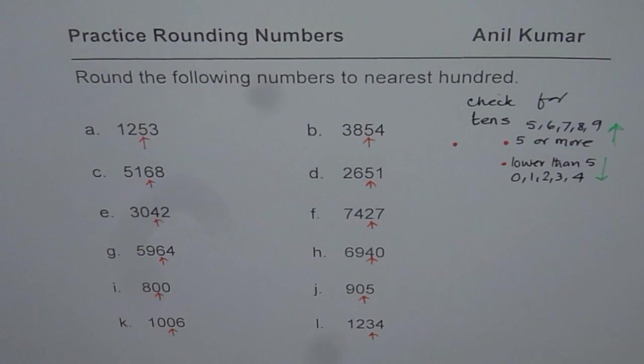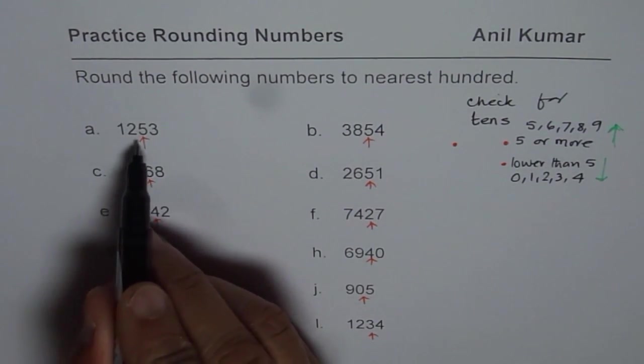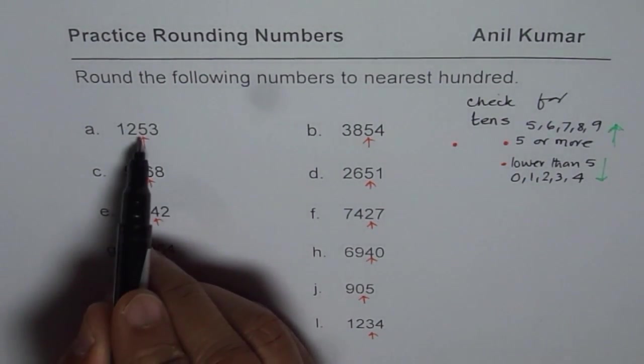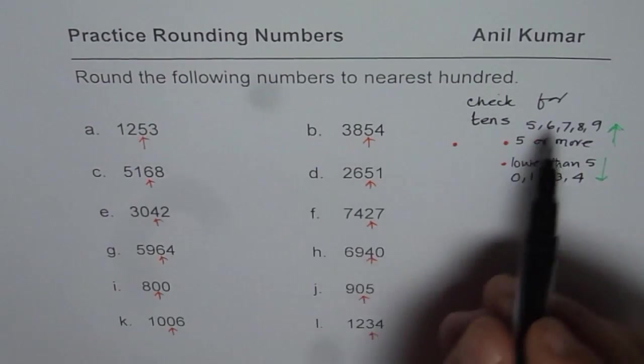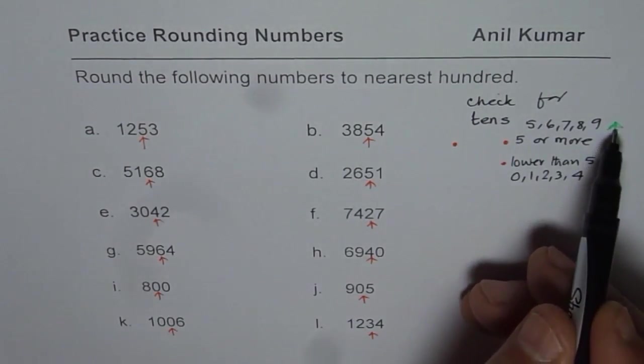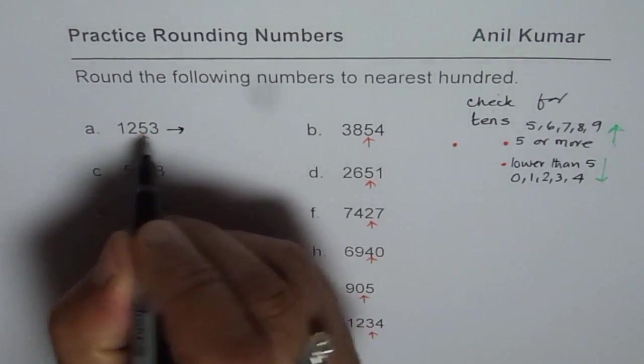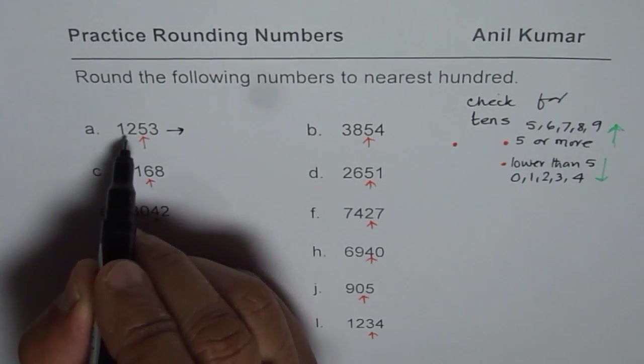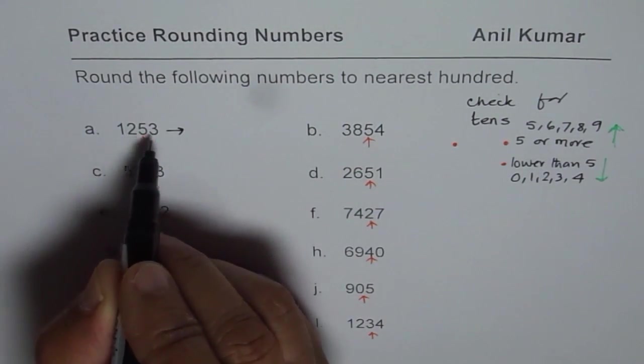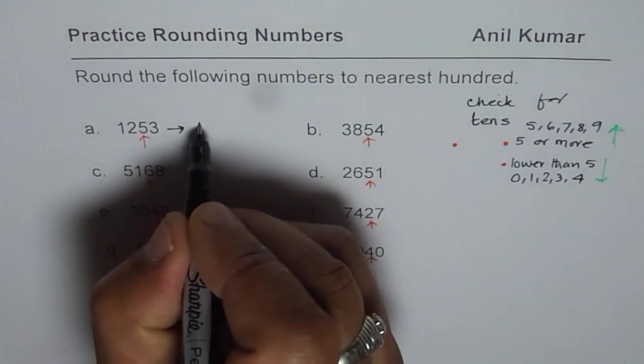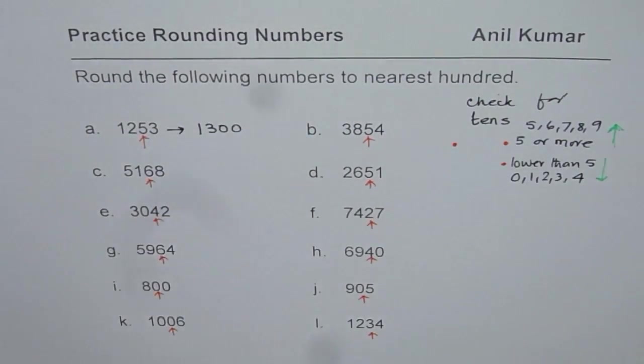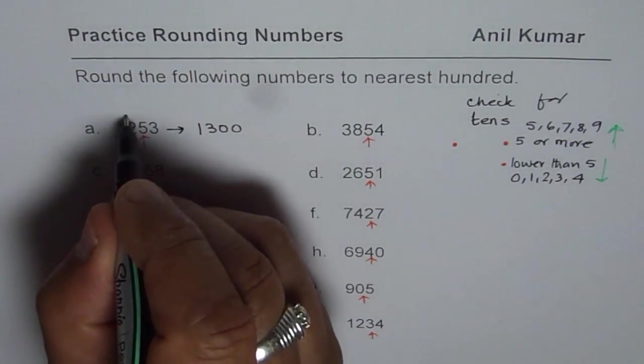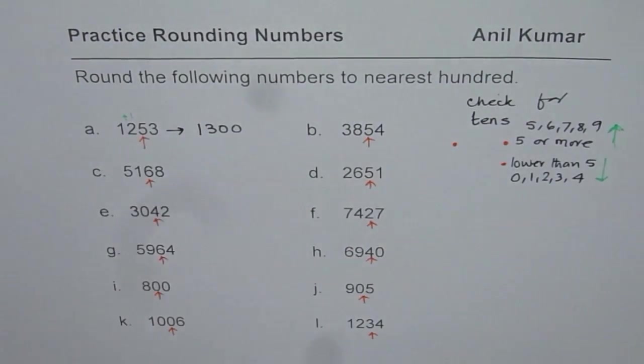So let's begin with the very first number which is 1253. Tens place we have 5, 53. 5 is in tens place. Since 5 or more, we have to round higher. So this number will be rounded to 12 means 1253 becomes 1300. So we increase this 2. That is what this concept is.